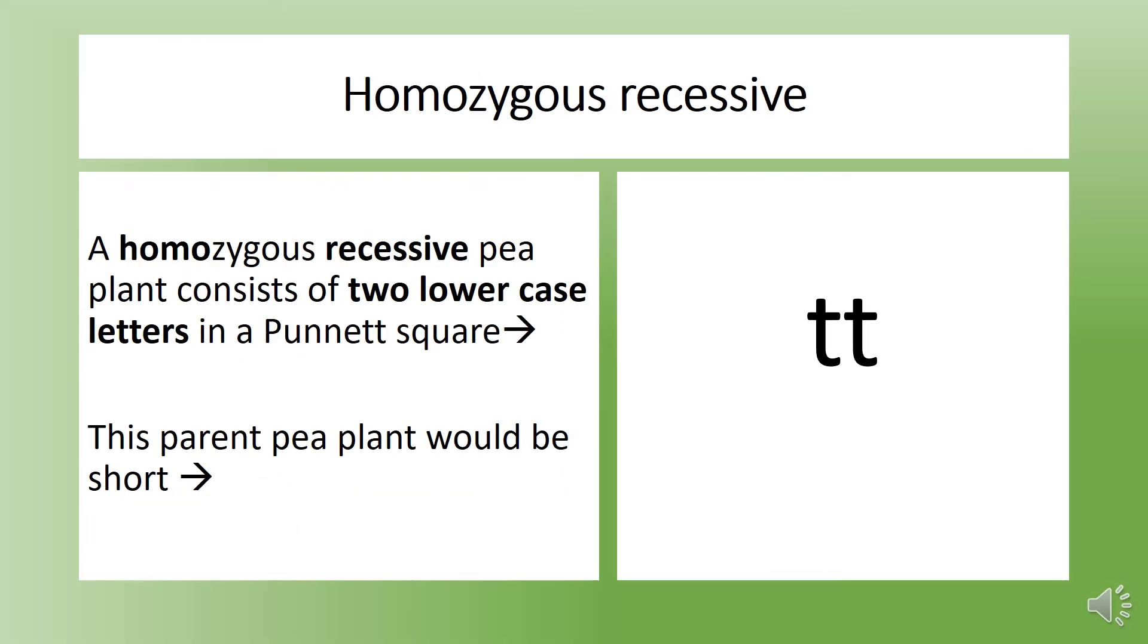Remember, in Greek homo means same. A homozygous recessive pea plant would consist of two lowercase letters in a Punnett square. This parent pea plant would be short.